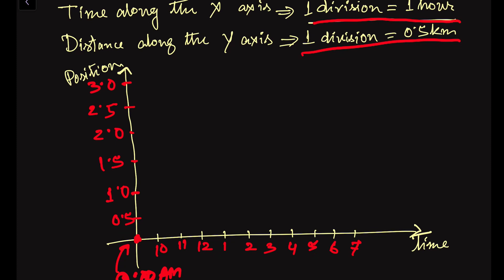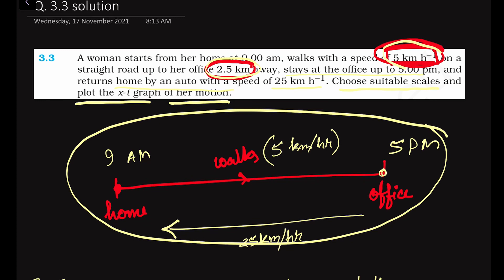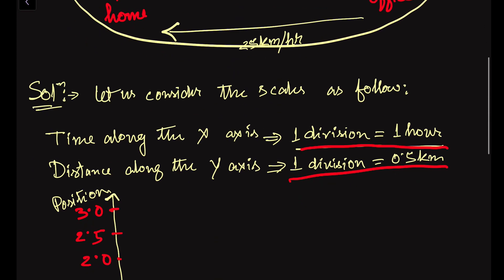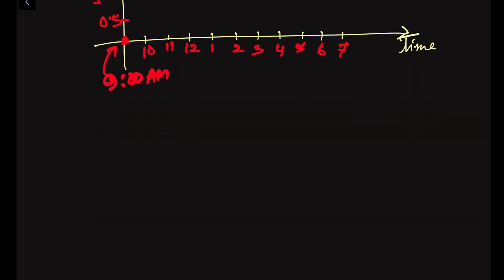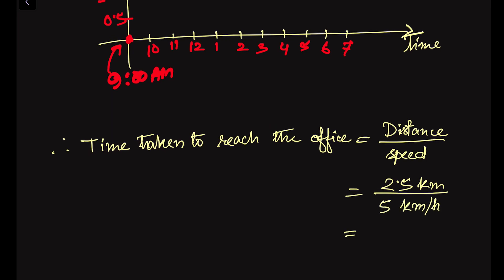We have to check the conditions given. She walks at a speed of 5 km per hour, and the office is 2.5 km away. So the time taken to reach the office equals distance divided by speed, which is 2.5 km divided by 5 km per hour, giving 0.5 hour.